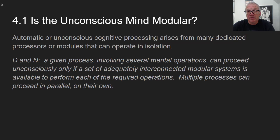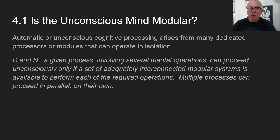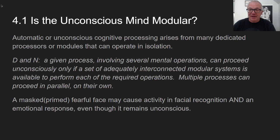They provisionally define what they mean: a given process involving several mental operations can proceed unconsciously only if a set of adequately interconnected modular systems is available to perform each of the required operations, and multiple processes can proceed in parallel. We've got auditory processing, visual processing, memory, motor centers, and language centers — they can do their work, as the blindsight case illustrated.